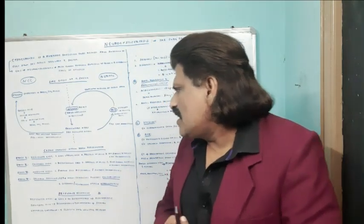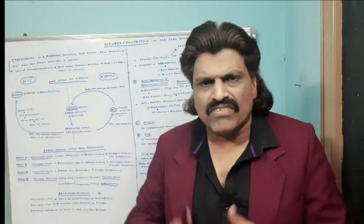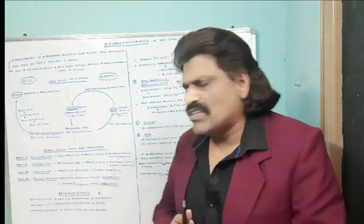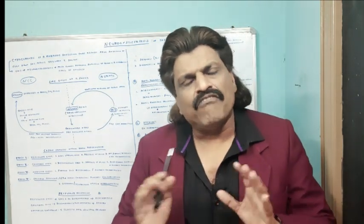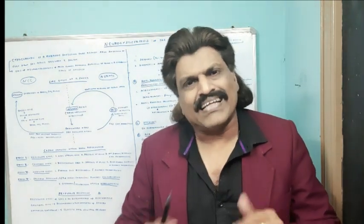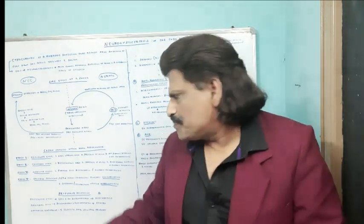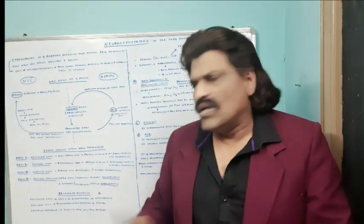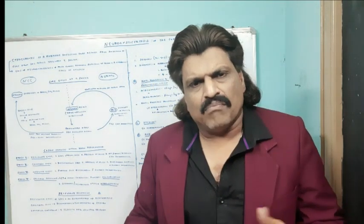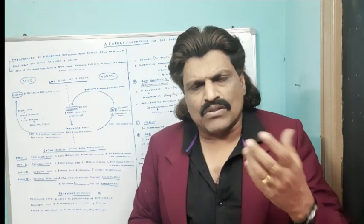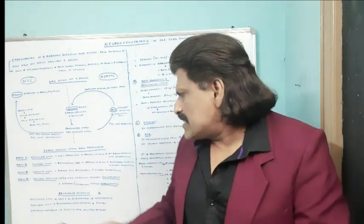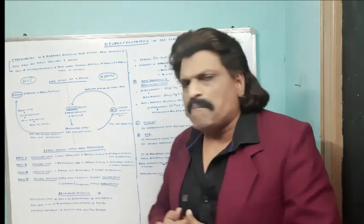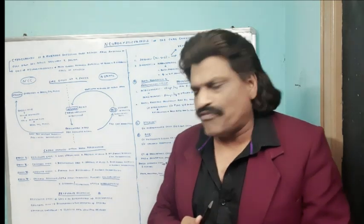The third is the nodular stage, where there is further cystic degeneration with contrast enhancement. Finally, the fourth stage is the calcified granuloma — the dead tissue — where it produces gliosis and calcification, which can be seen on CT scan as punctate calcification.